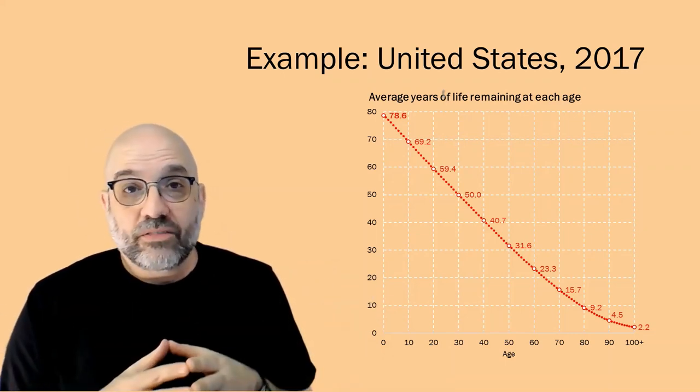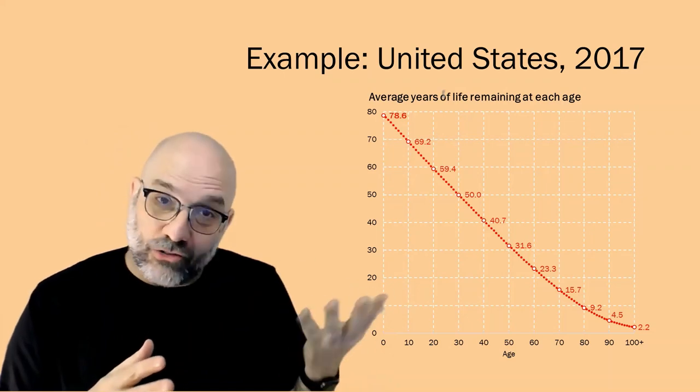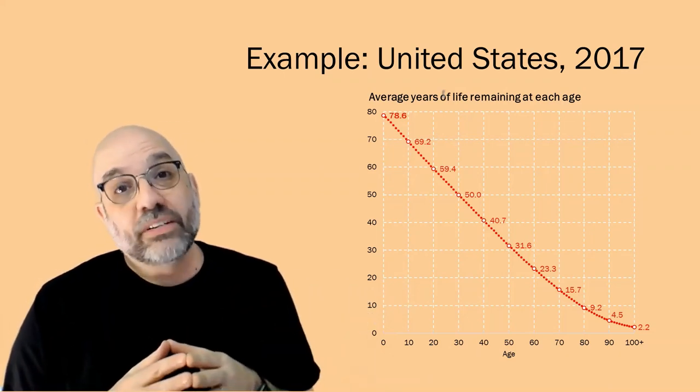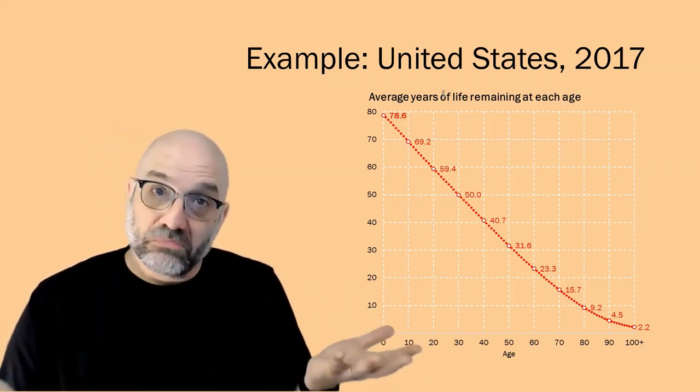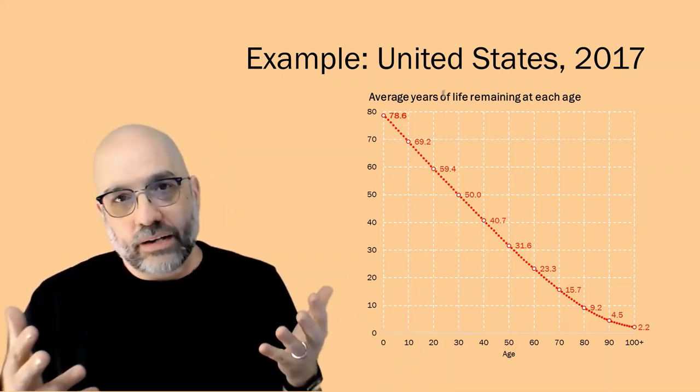Using our data from 2017, if you make it to age 100 in the hypothetical cohort, you have an average of 2.2 years left to live.